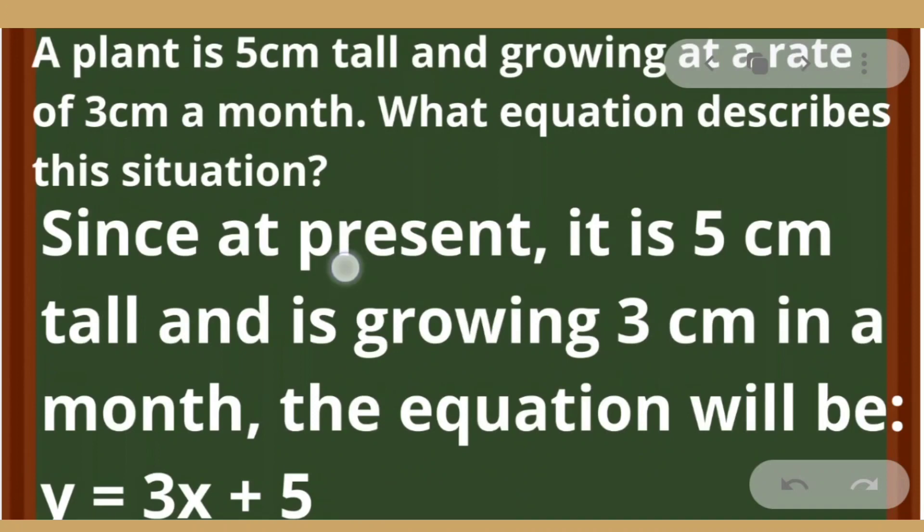Our equation will be, since at present it is 5 cm tall and is growing 3 cm in a month, the equation will be y is equal to 3x plus 5 where 3 is the constant rate and 5 is the height of the plant at present.